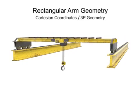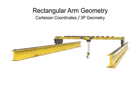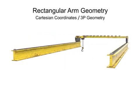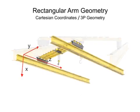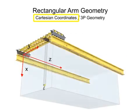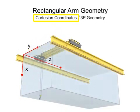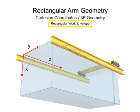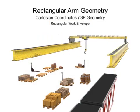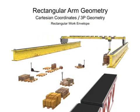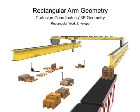It can move forward and backward, left and right, and up and down. Robotic arms that use Cartesian coordinate geometry generate a rectangular work envelope. Rectangular robotic arms have the simplest geometry and control system and are typically used in material handling operations.